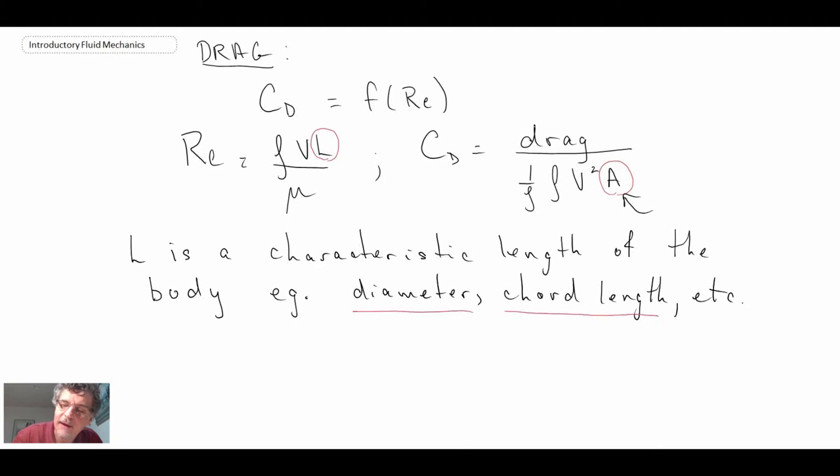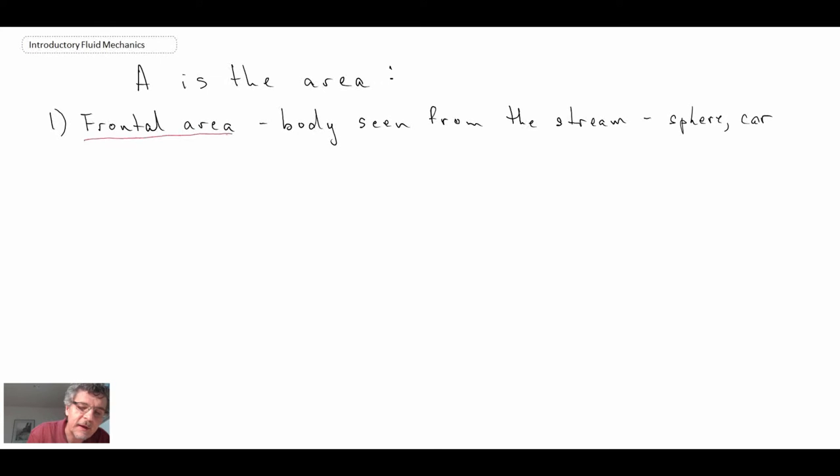The other thing is the area that is in the drag coefficient. The area can be referred to as the frontal area, and that refers to the area as seen from somebody in the fluid moving towards whatever body you're characterizing. Examples could be a sphere or a car. It's basically the projected area as seen from somebody coming towards the body.